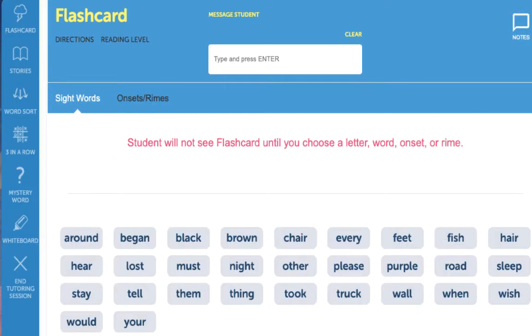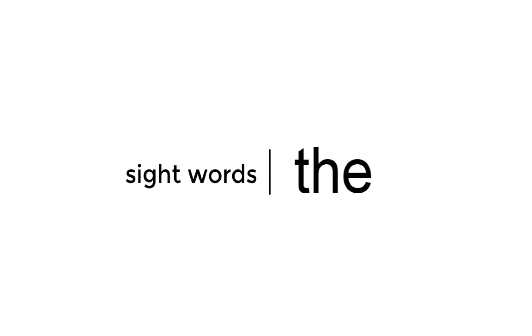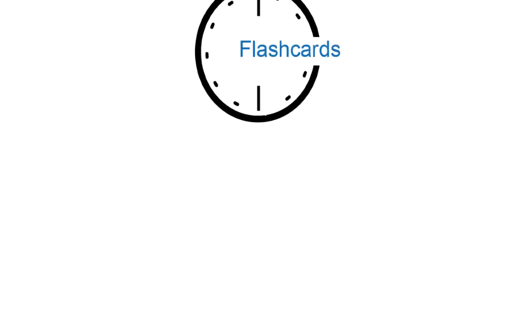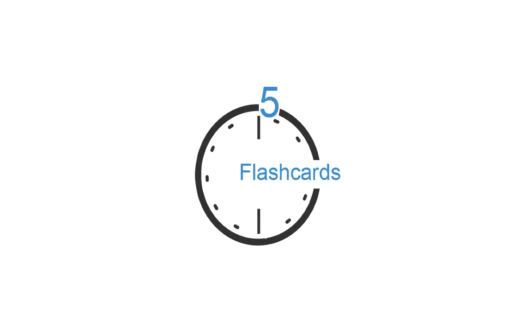The first activity in the sequence is flashcards. Flashcards has two functions. It gives students an opportunity to practice sight words and it tests students' knowledge of words that follow similar patterns. Both are learned skills that will help increase reading proficiency. Spend five minutes at the beginning of your session on flashcards.